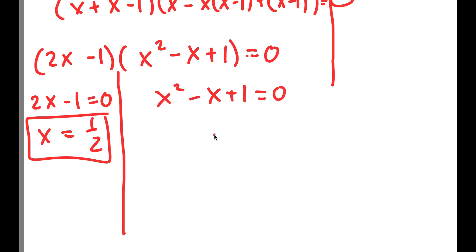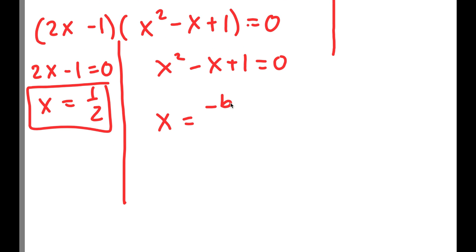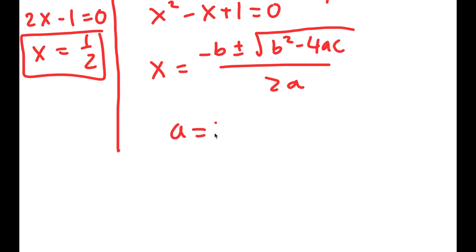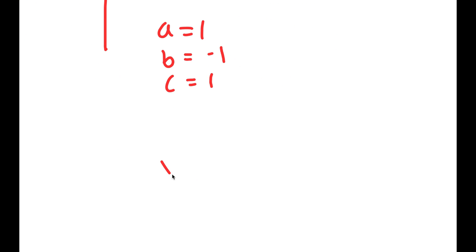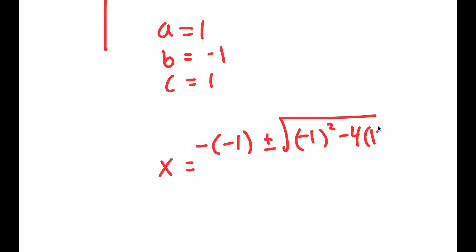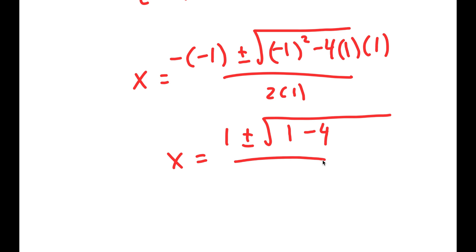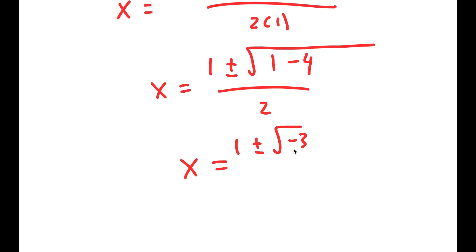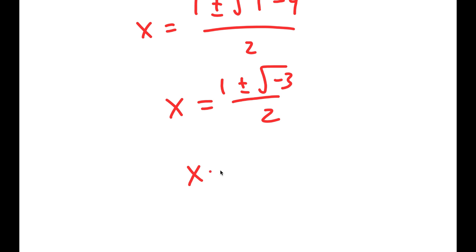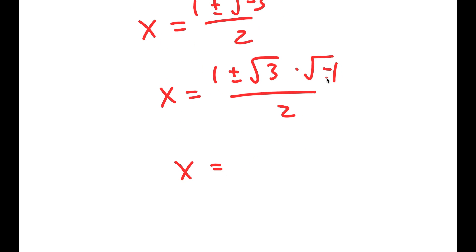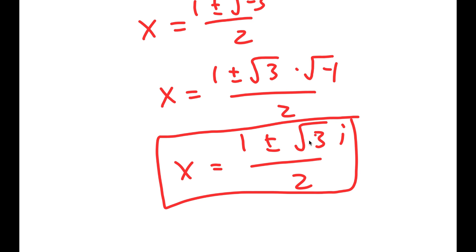To solve x squared minus x plus 1 equals 0, I can use the quadratic formula: negative b plus or minus the square root of b squared minus 4ac, all over 2a. In this case, a is 1, b is negative 1, and c is 1. So I get x equals positive 1 plus or minus the square root of 1 minus 4, over 2, which is equal to 1 plus or minus the square root of negative 3 over 2. The square root of negative 3 can be rewritten as the square root of 3 times i, so I get 1 plus or minus root 3 times i, all over 2. These are two more solutions, and these are imaginary solutions.